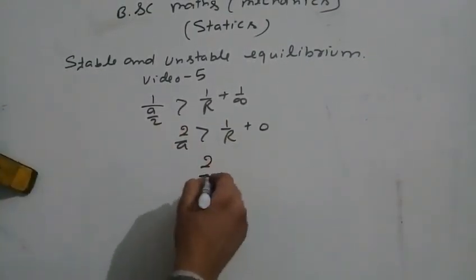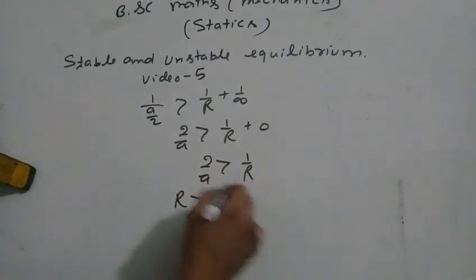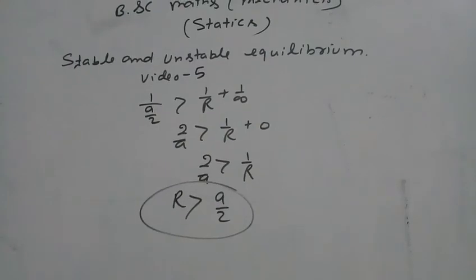So 2/a is greater than 1/R, which gives R is greater than a/2. The radius of the sphere must be greater than a/2. Thank you.